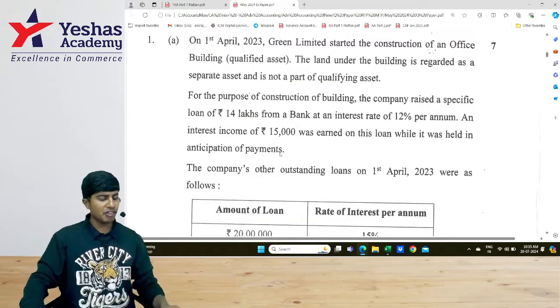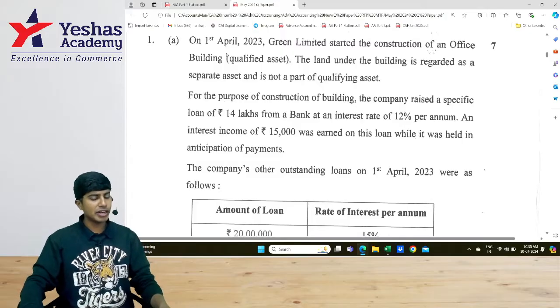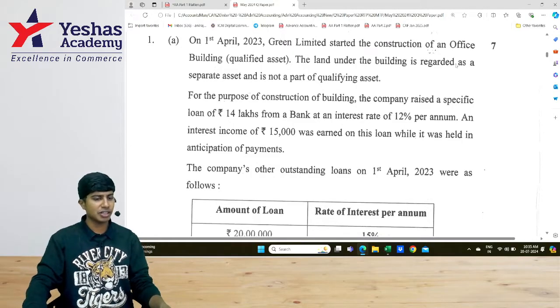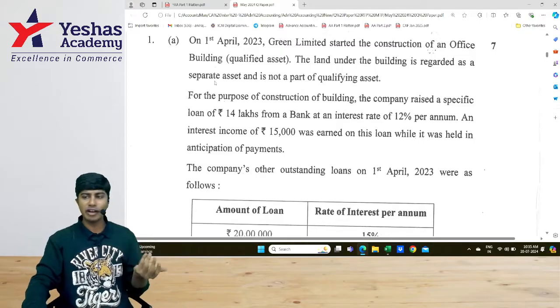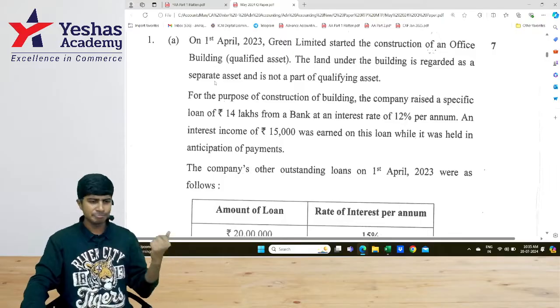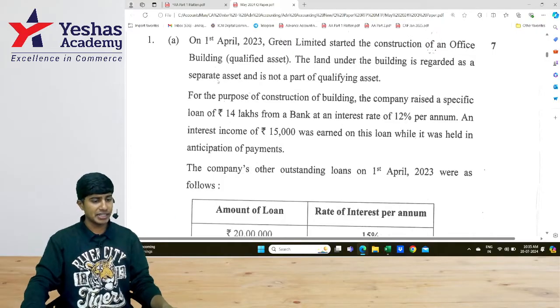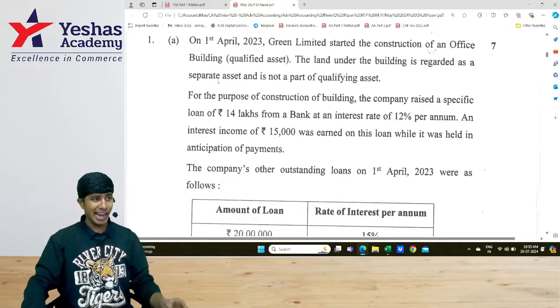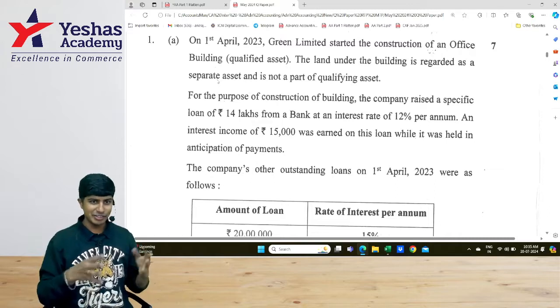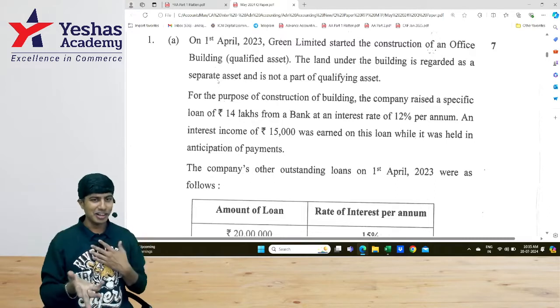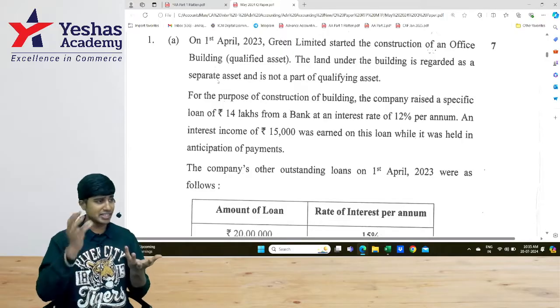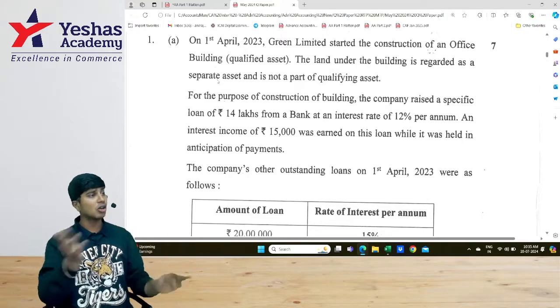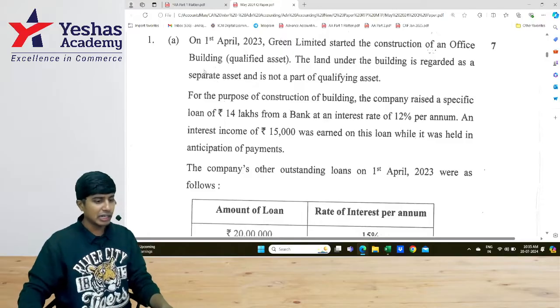Question number 1A from May 24 paper says on 1st of April 2023 Green Limited started construction of an office building. They have themselves told qualifying asset, so we don't have to check whether it is qualifying asset or not. The land under the building is regarded as a separate asset. It is not part of qualifying. Land need not be developed. Land is already there, just have to build a building over it. So building is a qualifying asset. We capitalize the interest, increase the cost and also depreciate only building not land.